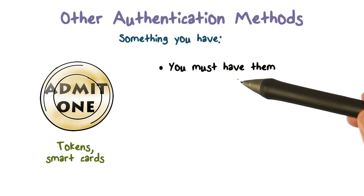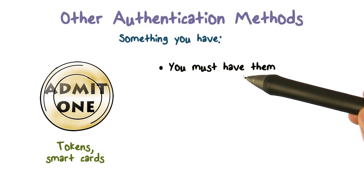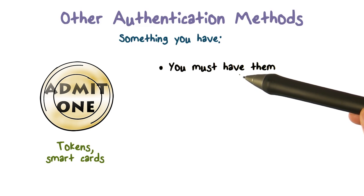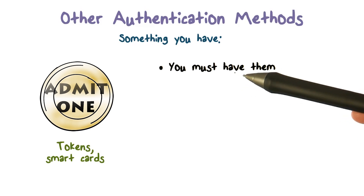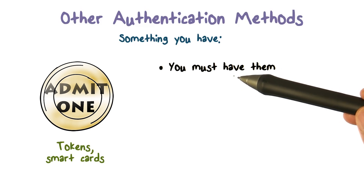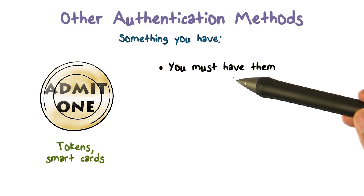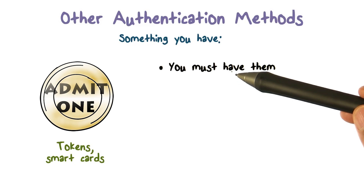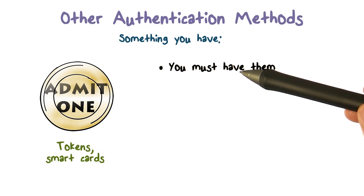If it's something you have, then you must have it on you. If you don't have your token, your smart card, or your smartphone — if that's being used as the something you have — you can't access the system. People sometimes forget these things. Especially with banks, when they give you tokens or send you a code, if you don't have that with you, you're not going to be able to access your account.